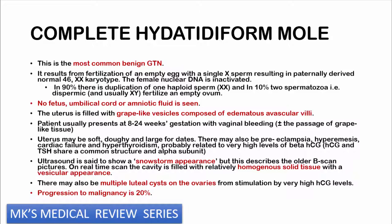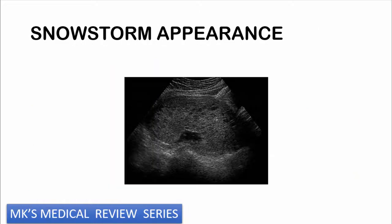So the complete mole can arise from two scenarios: an empty ovum fertilized by one sperm, with paternal DNA that then duplicates; or an empty egg fertilized by two spermatozoa. Normally, when fertilization happens, a membrane forms around the fertilized ovum to prevent further fertilization. Here is an example of the snowstorm appearance on ultrasound — you can see these vesicle-like structures present throughout the structure.